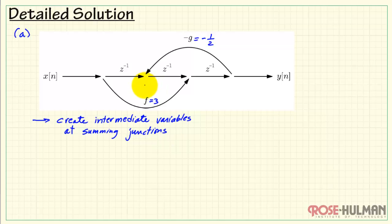First, we'll create the intermediate variables at the summing junctions. I'll call this v of n and I'll call this one w of n. At this point, I can begin writing the difference equations. V of n, we have x of n passing through a delay element. We would write that as x of n minus 1. Next, I bring in a scaled version of y of n. The scale factor is minus 1 half. So I write minus 1 half times y of n. That completes the summation for v of n.